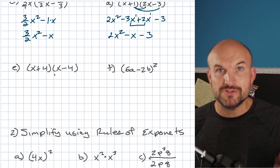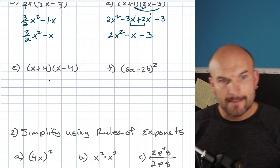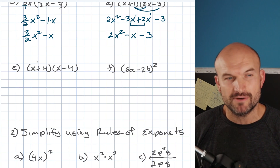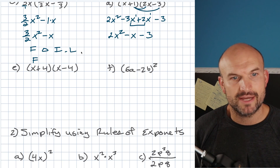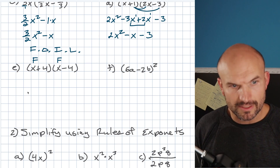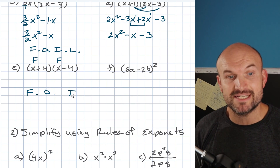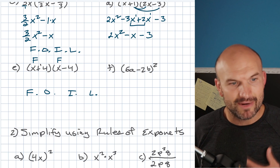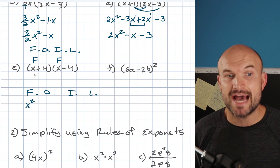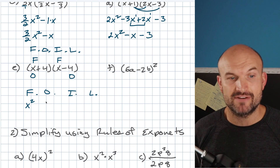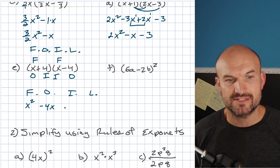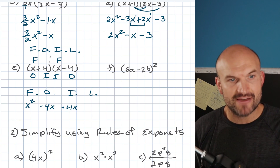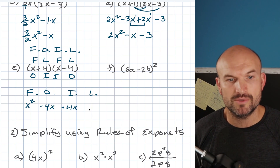Now let's go through another example using FOIL — first, outer, inner, last. Starting with the first terms: X times X is X squared. The outer terms give X times negative four, which is negative 4X. The inner terms give four times X, which is positive 4X. The last terms give four times negative four, which is negative 16.